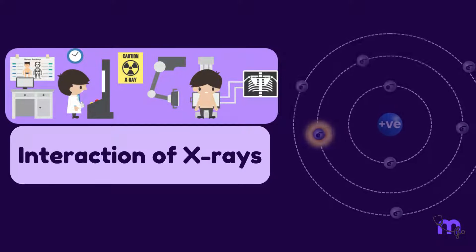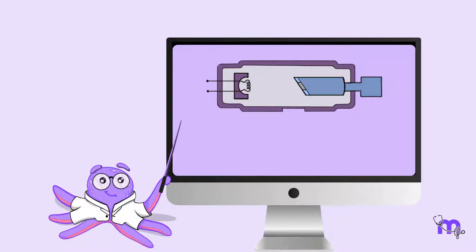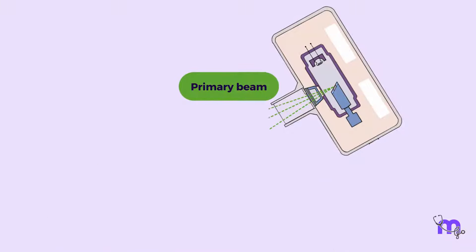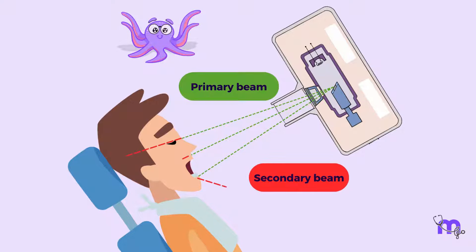Interaction of X-rays with Matter. By now we have learnt about the X-ray machine and how X-rays are produced in the X-ray tube in the form of characteristic and bremsstrahlung radiation. The primary X-ray beam emitted out of the tube travels towards the patient tissues. When it interacts with matter, secondary radiation is produced. This interaction between the X-ray photons and the tissue occurs in three ways.